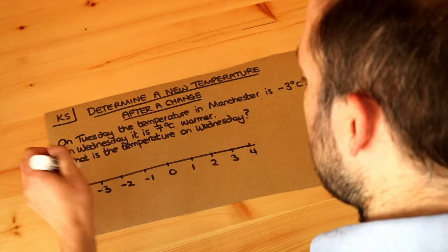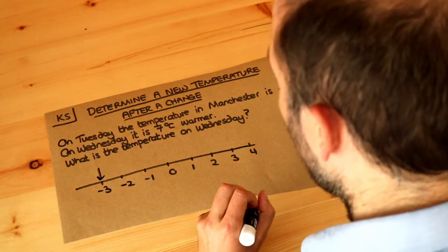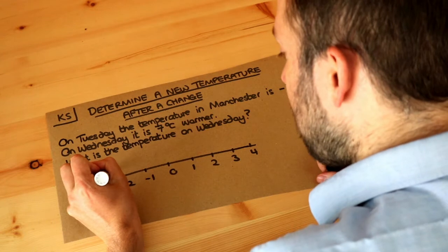Now the temperature is currently minus three Celsius. Now if it gets seven degrees warmer then we're going to add seven to that temperature.